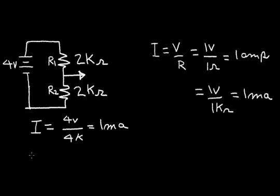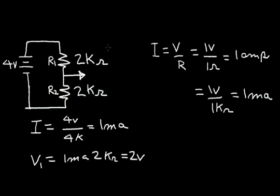Each resistor R1 and R2 has one milliamp of current, so we can calculate the voltage across each one. The voltage across R1 is equal to one milliamp times 2k ohms, which equals two volts. So we've divided the four volts and get two volts across this resistor. Since the same current flows through the other resistor and it's of equal value, we also have two volts across R2. If the resistors in the circuit are equal, the voltage divides equally among them.